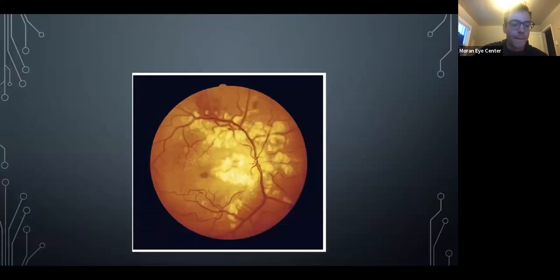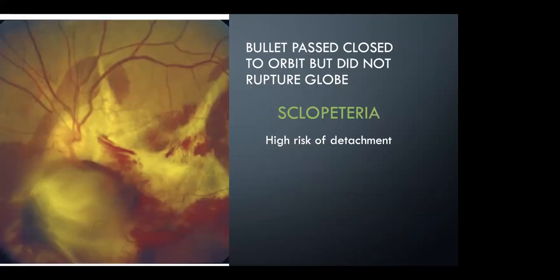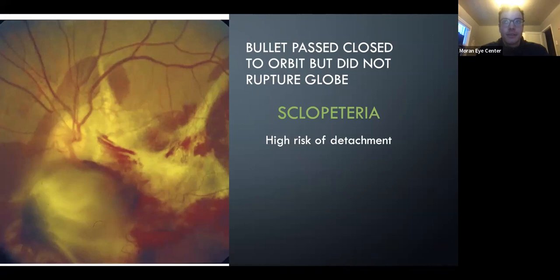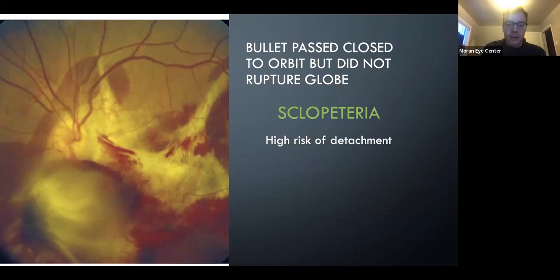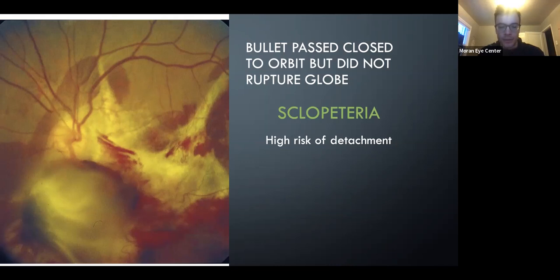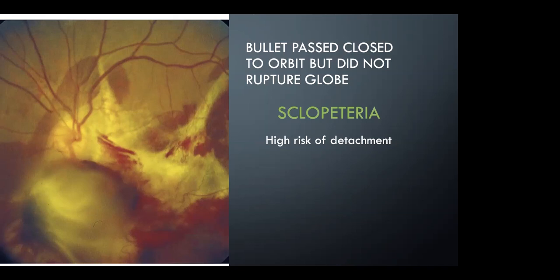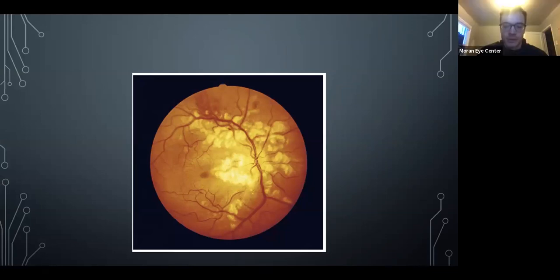Sclopetaria is caused by the shock wave from high-velocity projectiles — almost always a real gun. Commotion retinae is more of a blunt trauma counter-coup thing on the opposite side of the eye. One is always blunt trauma, the other is always penetrating bullet trauma, and sclopetaria is a lot more destructive.